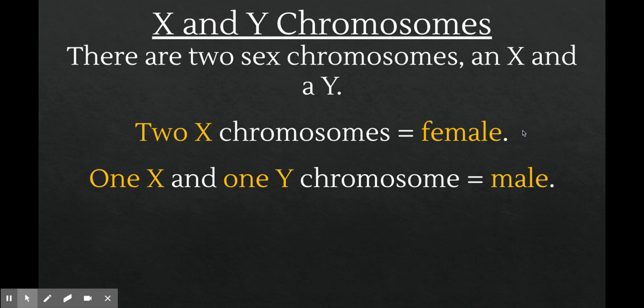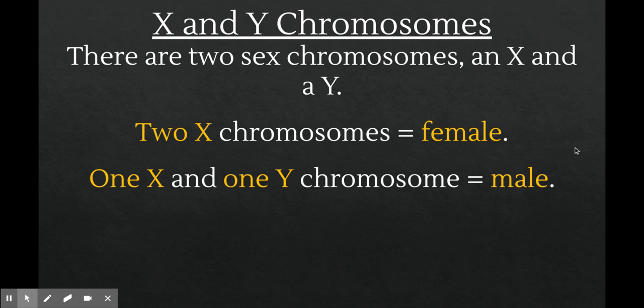I said 'standard outcomes' because there are actually many other possibilities. The majority of people get one of these two options, but there are people who receive something other — possibly one X and two Y chromosomes, two X and one Y, or three X chromosomes. There are lots of different combinations of sex chromosomes. We'll talk about that more when we discuss non-disjunction. Just know that not 100% of people fall into one of these two categories, but the majority do, and that's what we'll operate on for understanding X-linked traits.